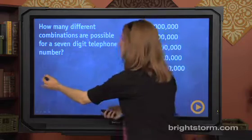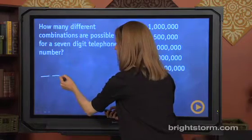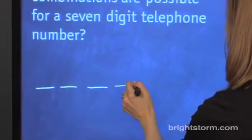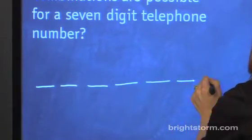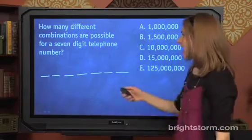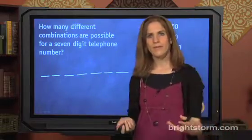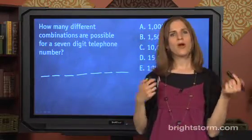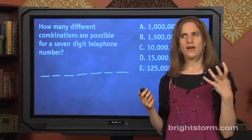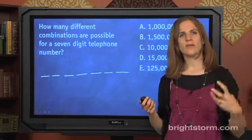Here we know we have seven different options—seven different numbers in our telephone number: one, two, three, four, five, six, seven. And the question is, how many choices for each one of those slots? This is the part where it's harder—you have to think, how many choices are available there?